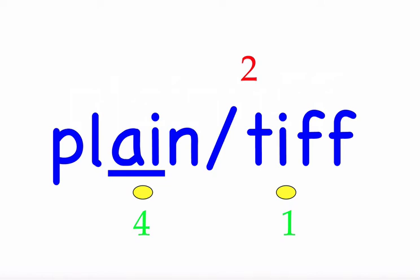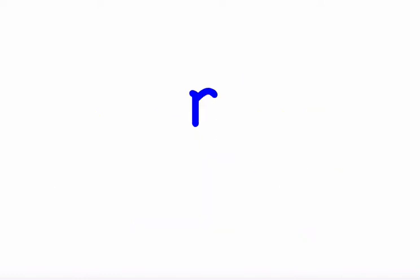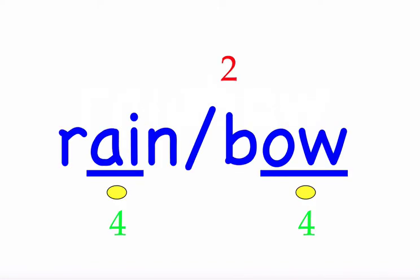Row six. The first word is 'rainbow.' A rainbow appeared above us. First syllable 'rain' — three sounds, R-A-I-N. Second syllable 'bow' — two sounds, B-O-W. Mark the word. Rainbow.